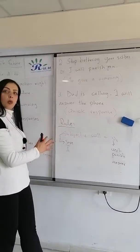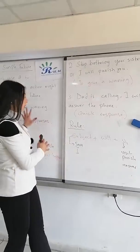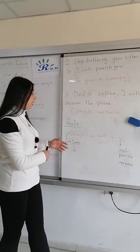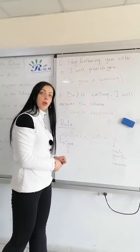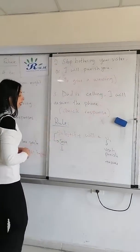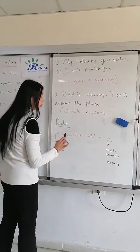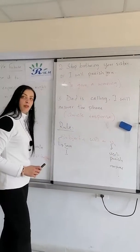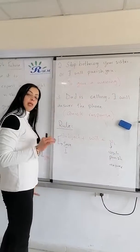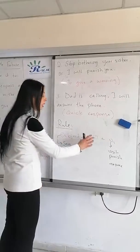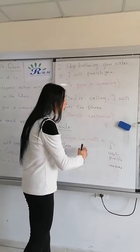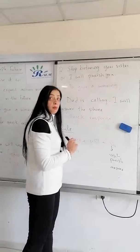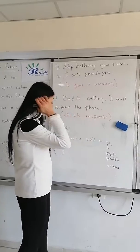Now these are what we call the uses of the future simple. Now what is the rule? The rule says that I must have a subject plus 'will' plus verb one, the infinitive. Bear in mind, 'will' is one of the modals. We always use verb one after 'will'.